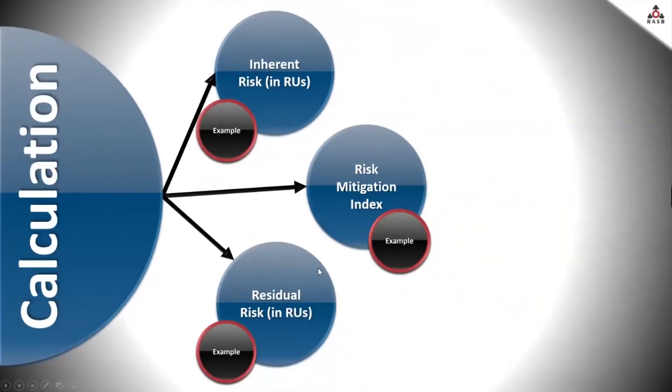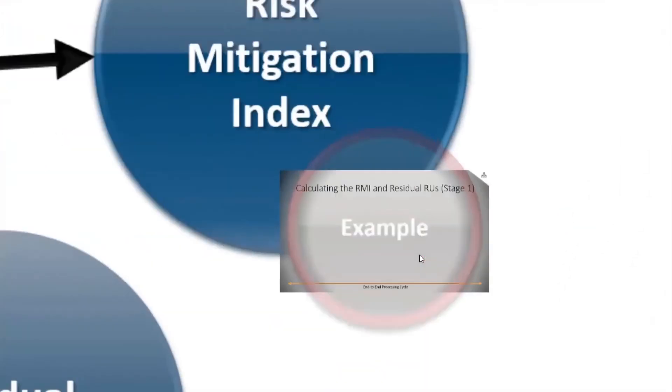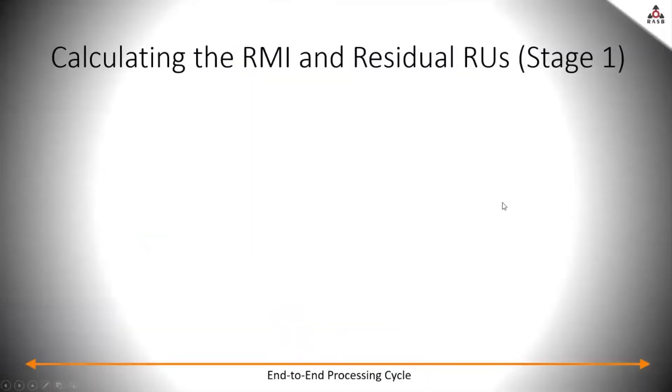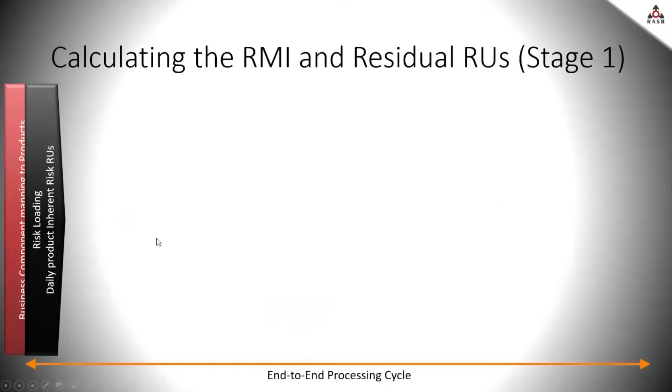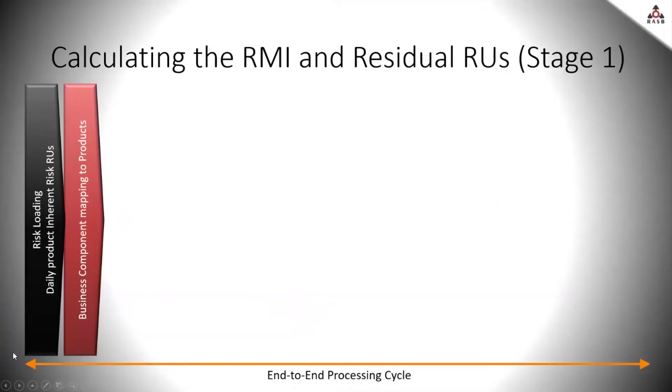The calculation also processes data related to the effectiveness level of the operational processes in mitigating the risk to generate what we call the risk mitigation index or RMI on a scale from 0 to 100. So this RMI basically looks at the operational effectiveness level.